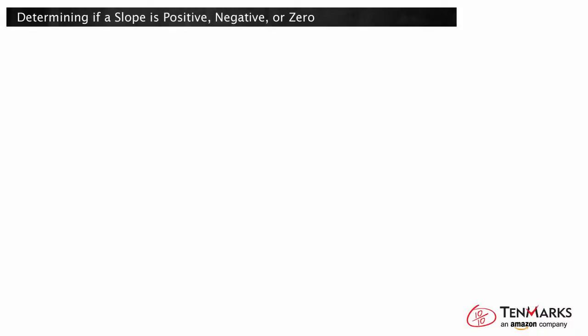In this video, you'll learn how to determine if a slope is positive, negative, or zero by visually inspecting the line. How can you tell if the slope of a line is positive or negative without looking at any numbers? The definition of a slope is a line that is at an incline or a slant.